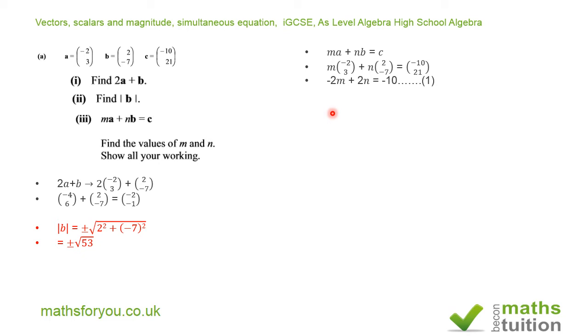Now, if I say that -2M + 2N = -10, and call that my equation 1. Similarly, I can say that 3M - 7N = 21, and that's my equation 2. If I then multiply equation 1 by 3 and equation 2 by 2, I end up with -6M + 6N = -30. That is now my equation 3.